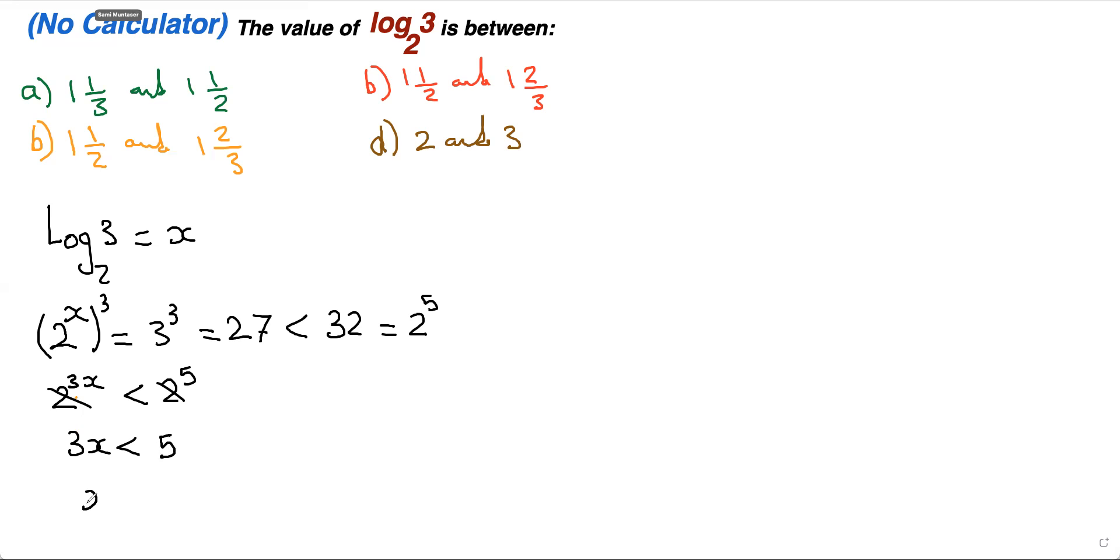And therefore, X is less than 5 thirds. We just divide both sides by 3. And maybe you could just change that to X is less than 1 and 2 thirds.